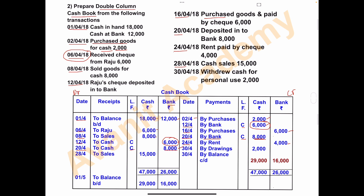On 28th April, there are cash sales of rupees 15,000. Cash sales means goods are sold for cash. Sales is a receipt for the business, so record it on the receipt side. Write 28th April, 'to sales', and record 15,000 in the cash column.